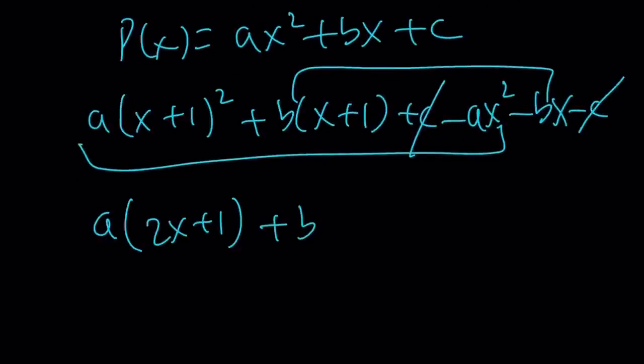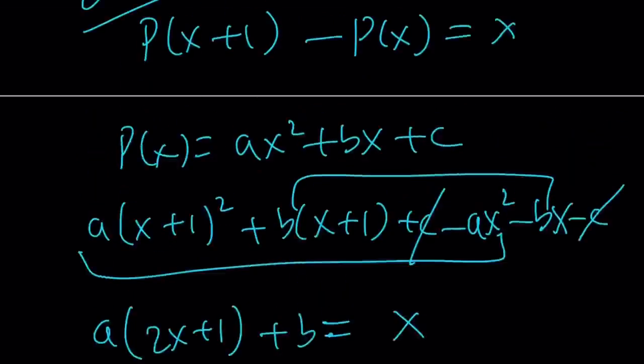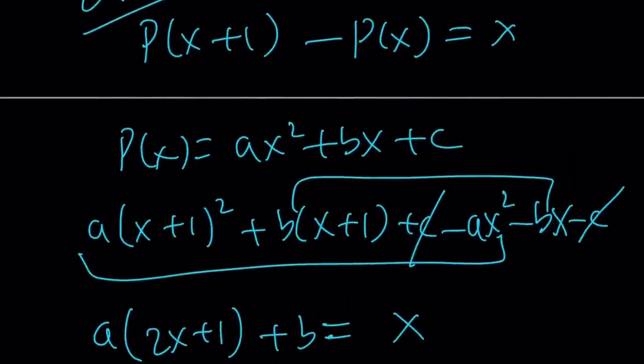b times 1, just b, equals x. Remember, our expression was equal to x, right? Yay. Awesome. Now, we can do the following. 2ax plus a plus b equals x.